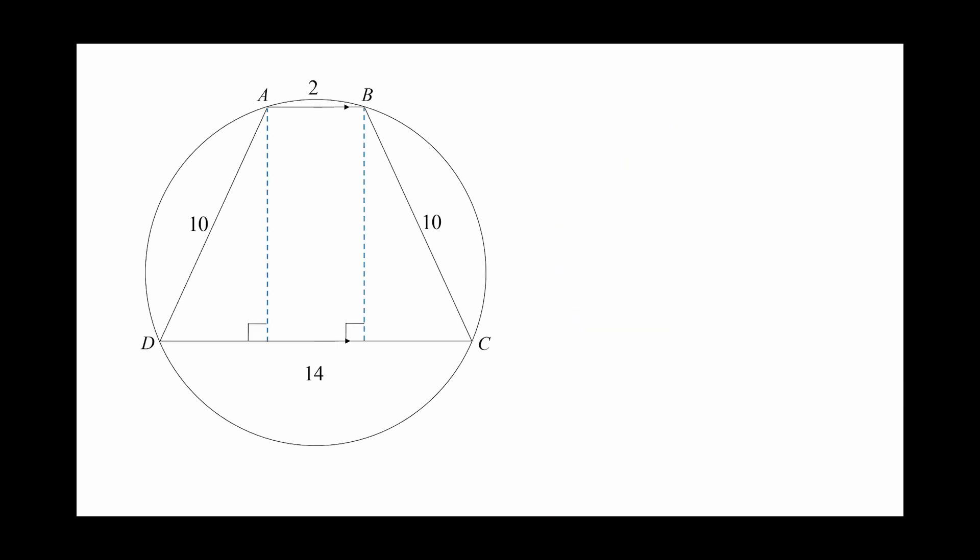First of all, we construct the heights from two points A and B to the lower side DC. We call them AE and BF. Therefore, we have a blue rectangle ABFE. Because EF and AB are opposite sides of the rectangle, so their lengths are equal to 2.